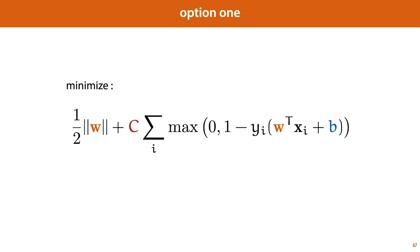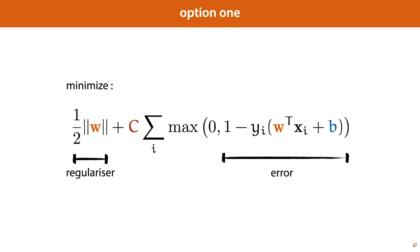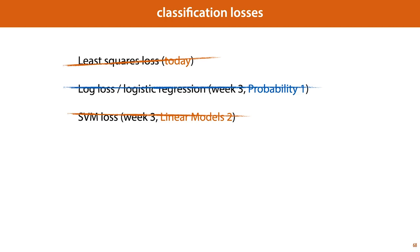Looking at this function more closely, we can identify two interesting quantities. First, the term on the right can be thought of as the error: we know that y_i times the hyperplane output should evaluate to one, so we measure the distance between one and that value. By applying the maximum with zero, we say that if this error drops below zero we don't care about those points — we only care about the error of points close to the hyperplane. The second term can be thought of as a regularizer: it doesn't involve the data but ensures that the parameters of the plane don't grow too big. With that, we have discussed our final classification loss.